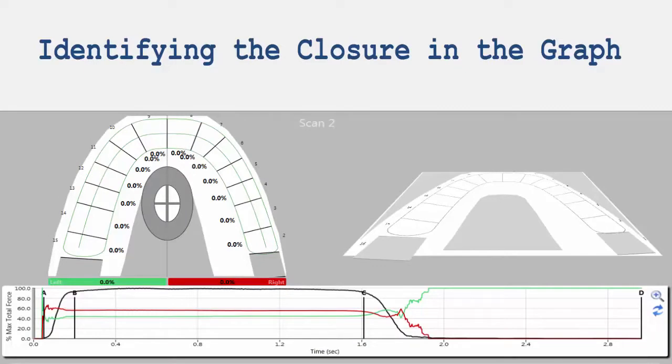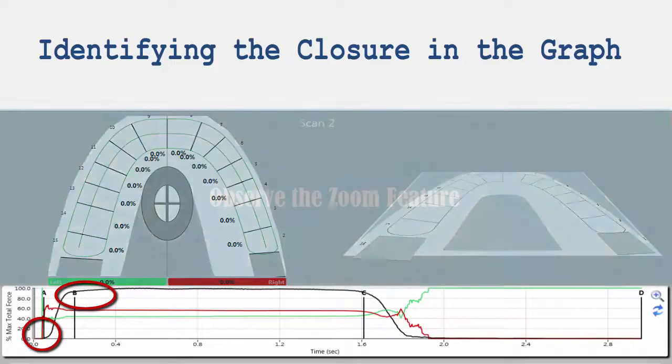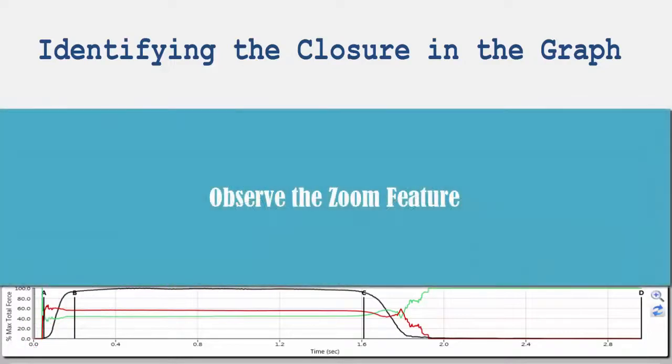To evaluate a patient's bite during closure, you first need to identify the key area to observe. The closure is located on the graph at the initial rise of the black force line and ends when the black line nears its peak.